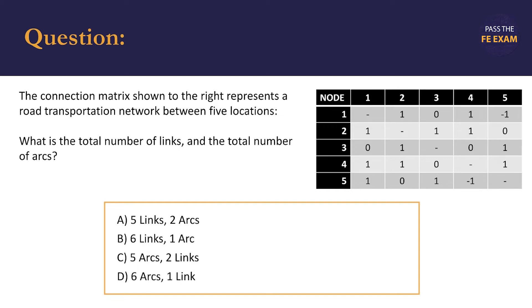In this problem we're looking at the structure of transportation networks, specifically within the Transportation Engineering section of the Civil FE. We're shown the table on the right, it's giving us data with five data columns and five data rows, and those columns and rows represent the five nodes or intersections in a transportation network. We're asked what the total number of links and arcs are.